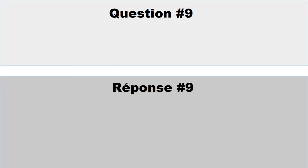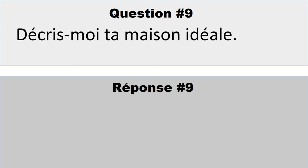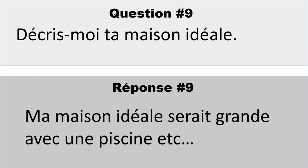Question number nine: Décris-moi ta maison idéale. «Décris-moi» means describe to me, and «idéale» is an important key word because it affects the tense you use. Your answer will use the conditional: «ma maison idéale serait...» — serait means «would be». You must use the conditional because it's an ideal house that doesn't exist. For example: «ma maison idéale serait grande avec une piscine», etc.